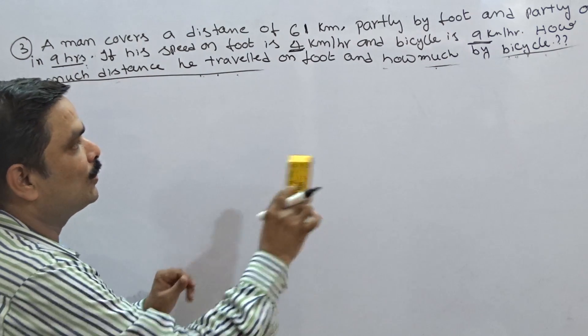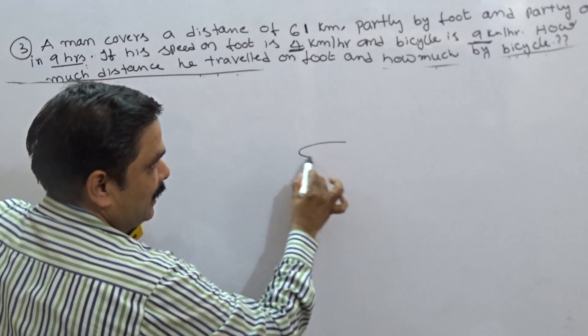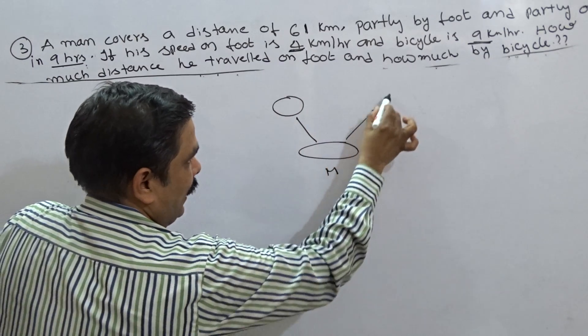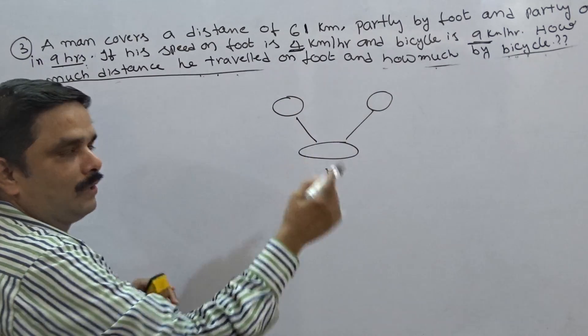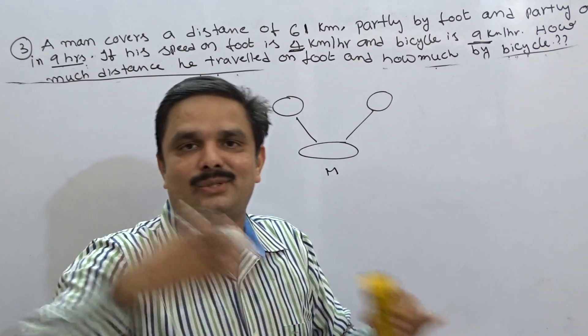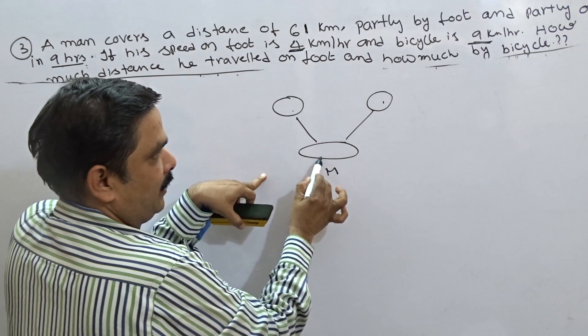How to use rule of allegation? To go for rule of allegation, you know that one, I should have a mean value, then one value here and other value here. Generally, we talk in terms of like commodities like rice, sugar, something like that. Here, dearer one, cheaper one, mean value.